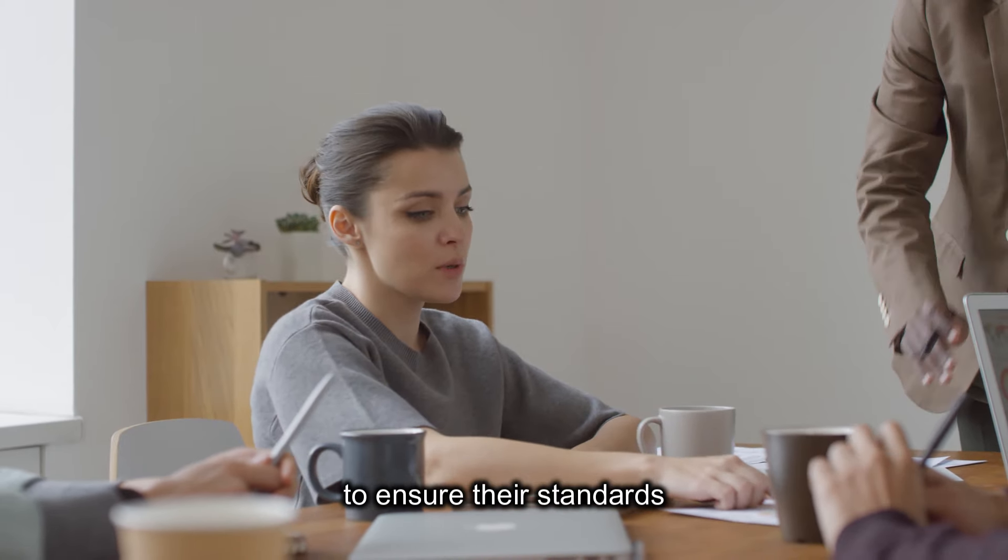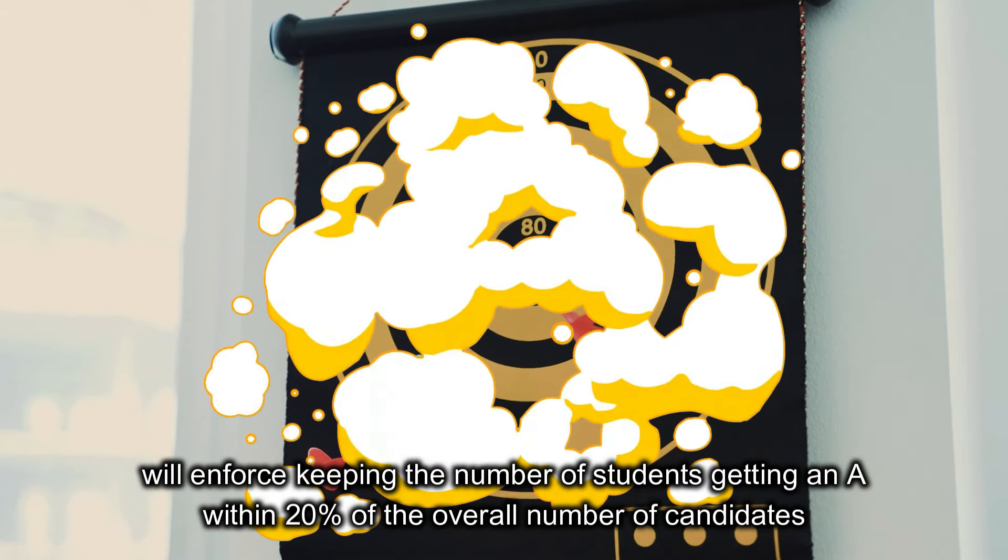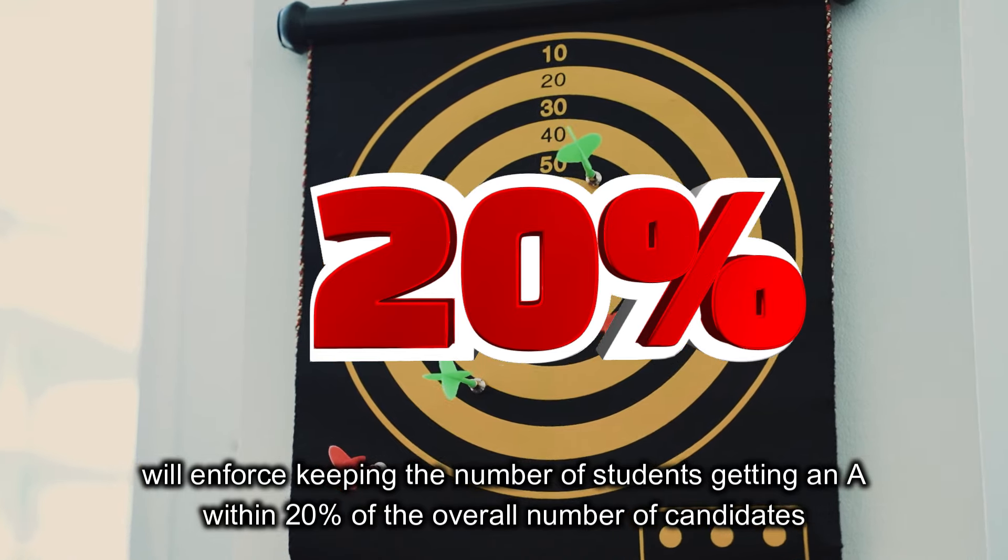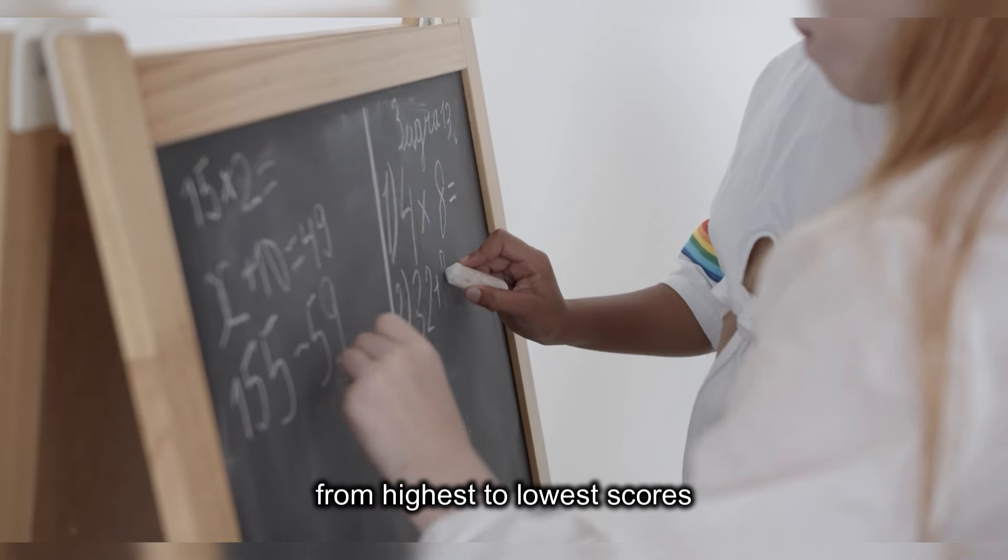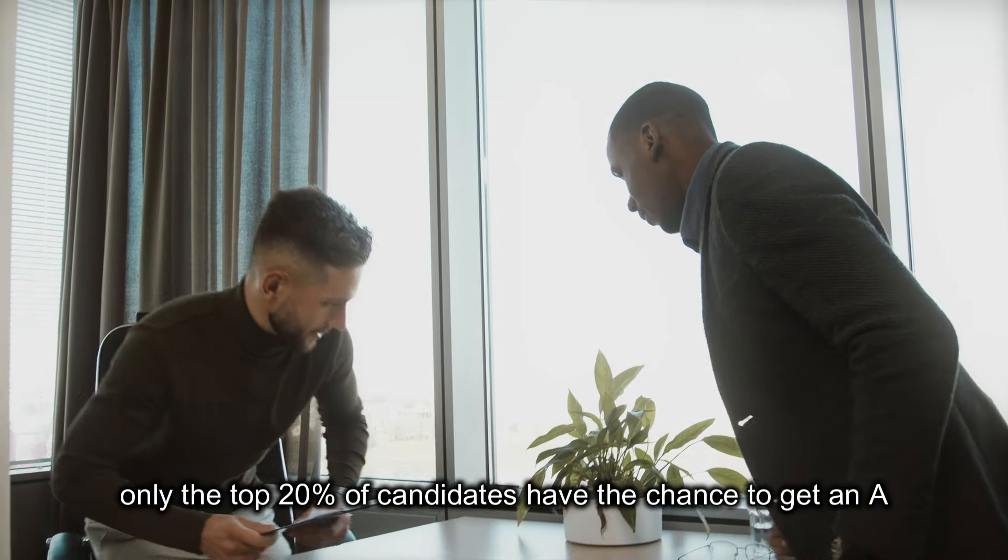In addition, some schools, to ensure their standards, will enforce keeping the number of students getting an A within 20% of the overall number of candidates. In other words, from highest to lowest scores, only the top 20% of candidates have the chance to get an A.